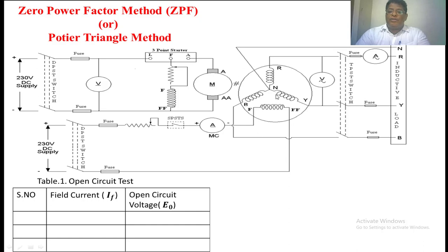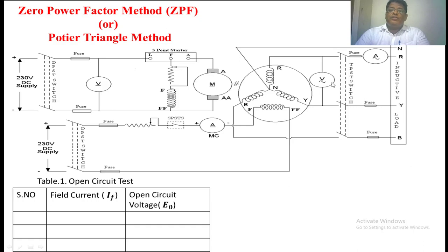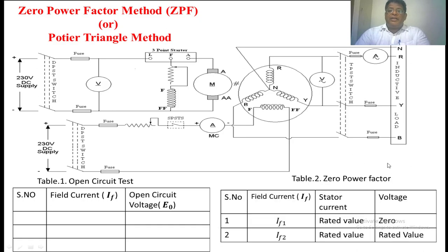Now bring the field current slowly to zero so that the voltage also becomes zero. Do not disconnect the mechanical input to the alternator. Now close the DPST switch — that is, apply the inductive load across the alternator. By changing the field current and the load, make the ammeter reading equal to the rated current of the alternator and the voltmeter reading equal to zero. That is the first reading. The second reading is: again by adjusting the field current and load, the ammeter reading is the rated value and the voltmeter reading is also the rated value. Note these two readings — the field current at rated armature current with zero voltage, and the field current at rated voltage and rated current.